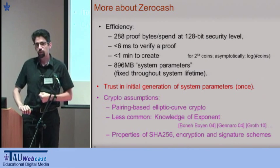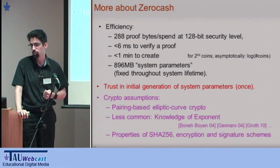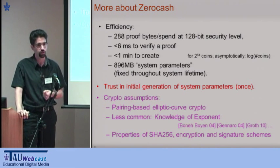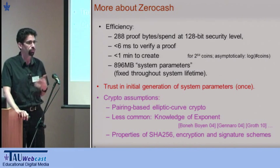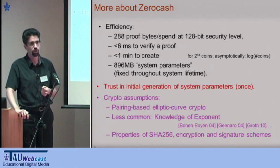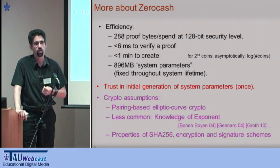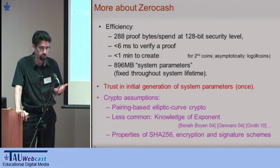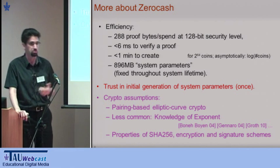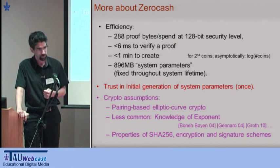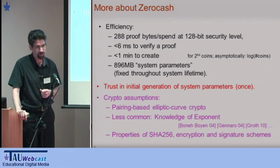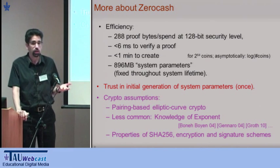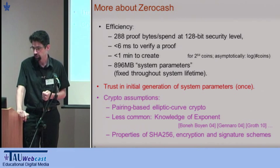Let me just convince you this will be efficient. The proofs we create are less than 300 bytes long, take a few milliseconds to verify, and under a minute to create. There is a public parameters file you need to create and share with everyone to facilitate the proofs — the same one Alessandro discussed. It's under a gigabyte in size, which is already much smaller than the whole Bitcoin blockchain. Devices dealing with Bitcoin will typically be well equipped to hold a gigabyte of storage. The Bitcoin history is currently around 24 gigabytes.